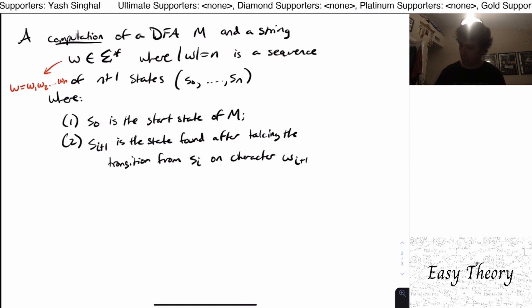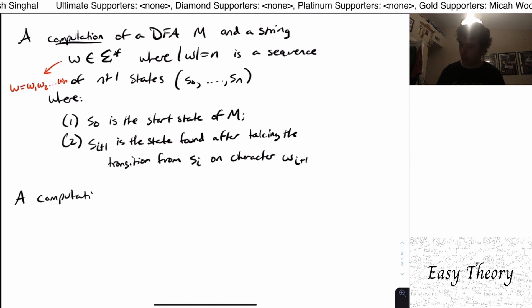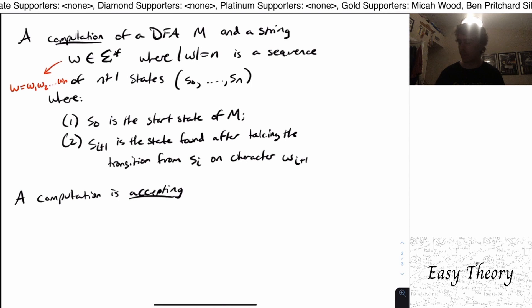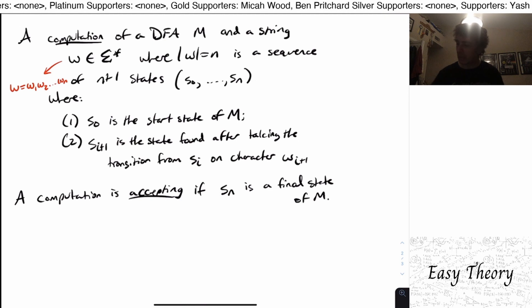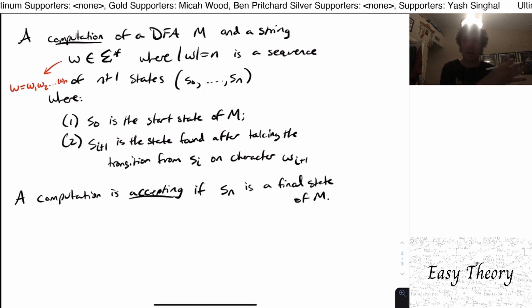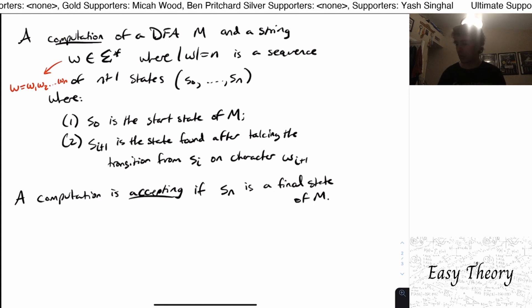Okay. And one more definition, a computation is accepting. So it's an accepting computation, if s sub n, the last state is a final state of M. Because this sequence is just a sequence of states, it may or may not land in a final state. But we're going to say an accepting computation is one that actually ends in a final state.